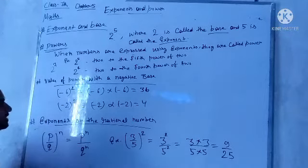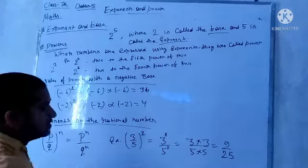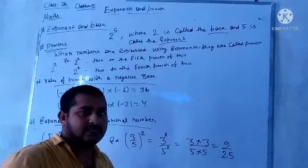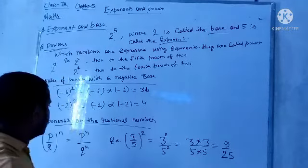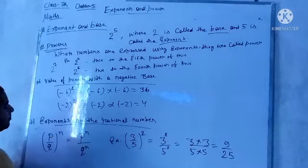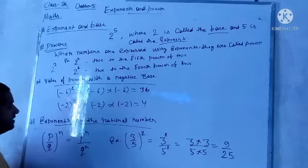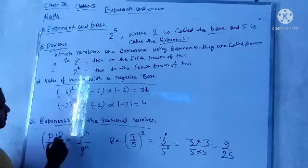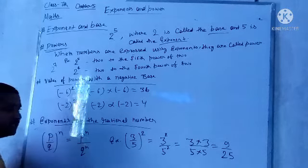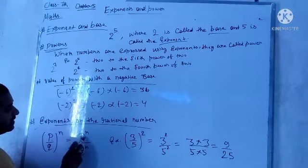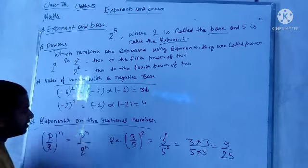Let's take a look at the exponent on the rational number. Like in the past class, the rational number was written. So, if the rational number comes to power, then what will happen? P by Q is the whole power of n. So, the power is P and Q.